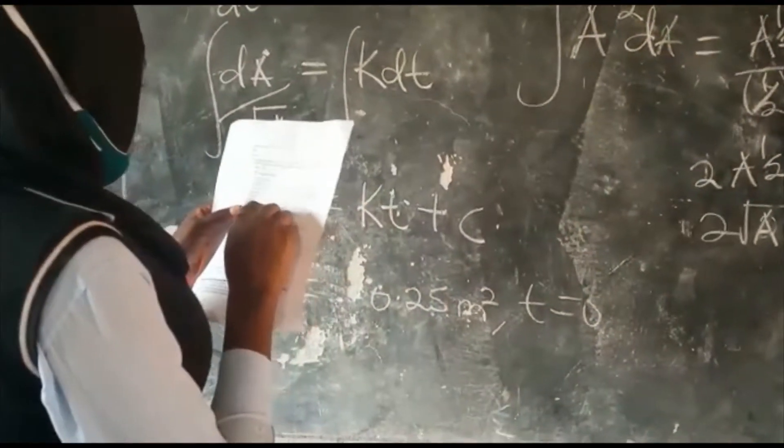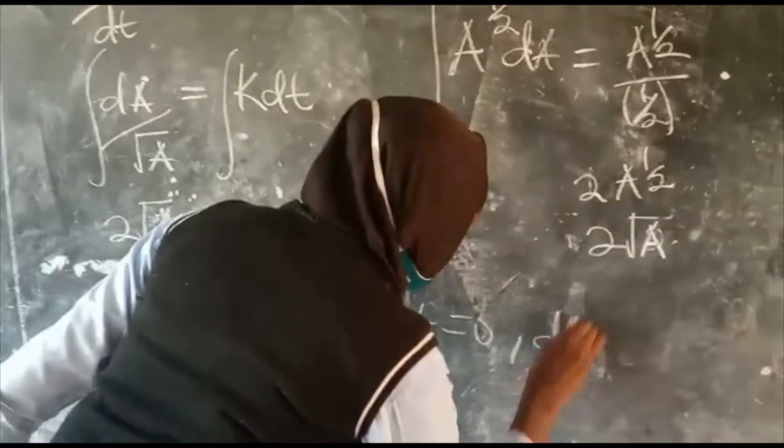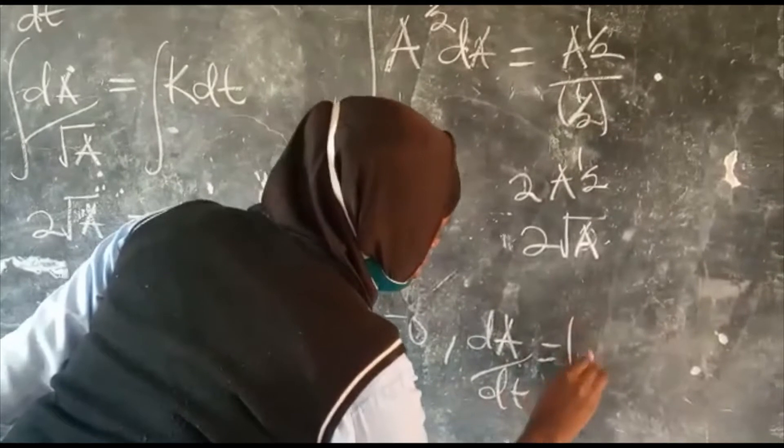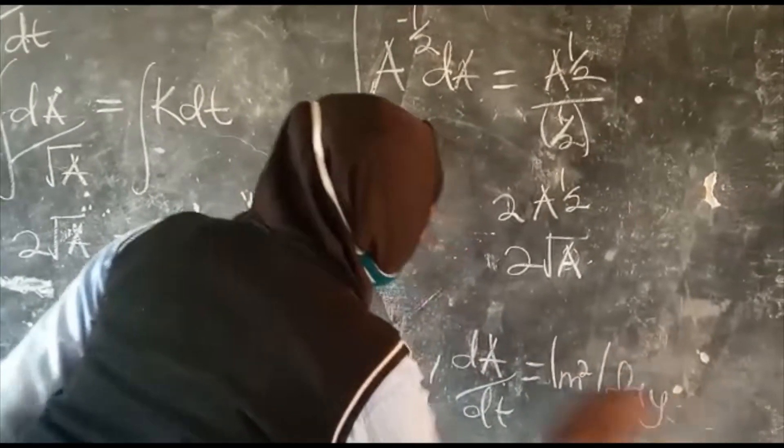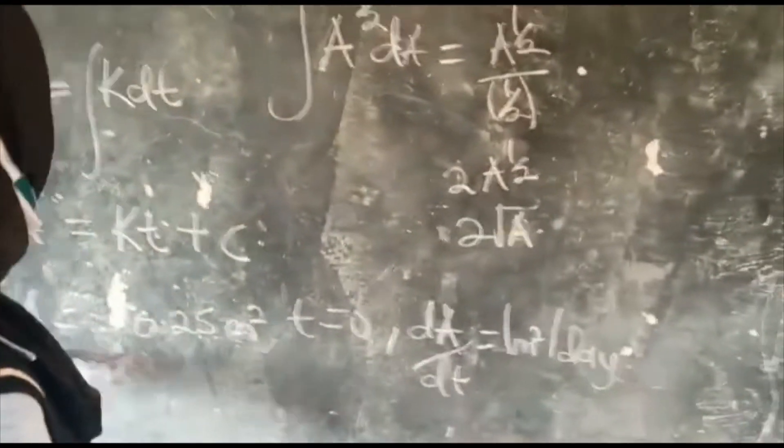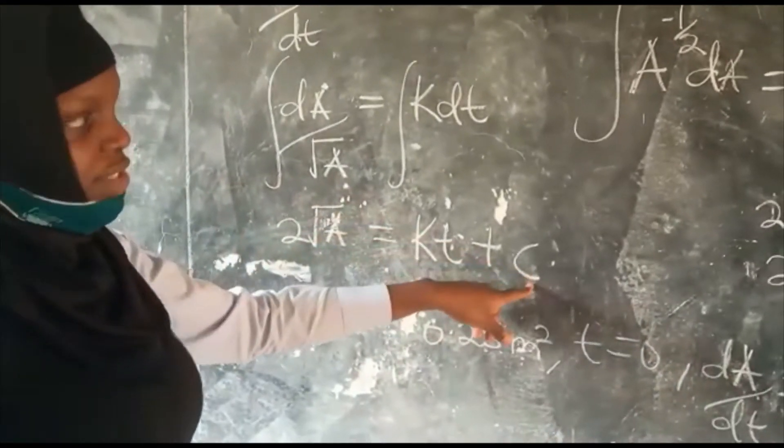And then, its rate of growth per day is dA/dt is equal to 1 meter squared per day. So, I am going to substitute t equal to 0, and A is equal to 0.25 meters squared to get the value of c.